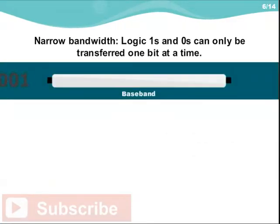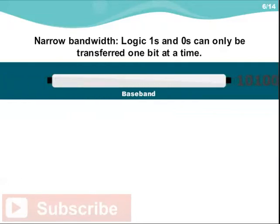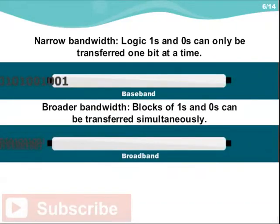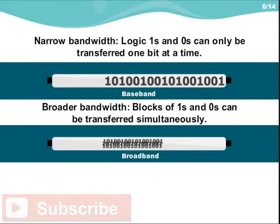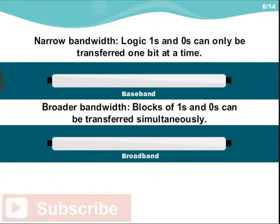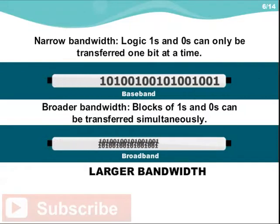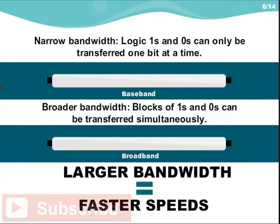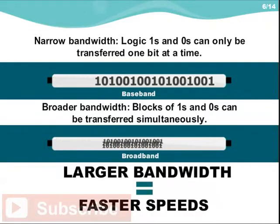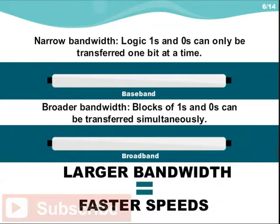A narrow bandwidth can be compared to the smaller diameter pipe in our example — logic 1s and 0s can only be transferred one bit at a time over the transmission medium. A broader or wider bandwidth can be compared to the larger diameter pipe, where blocks of 1s and 0s can now be transferred simultaneously. The greater carrying capacity of a larger bandwidth means that a given block of data will arrive at its destination faster.